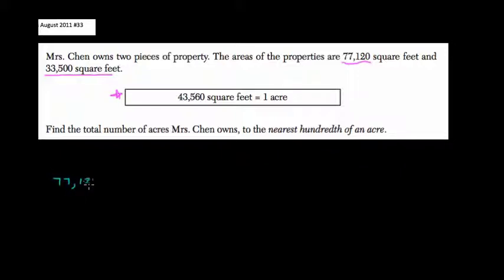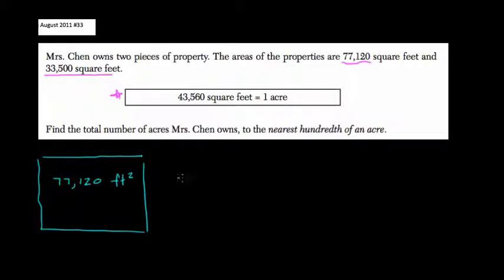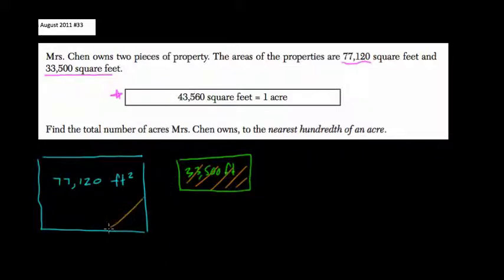77,120 square feet, some large property here. And then this smaller property over here, the 33,500 square feet. We're putting them together, and we want to know what is this total. What is the total acreage between these two properties?